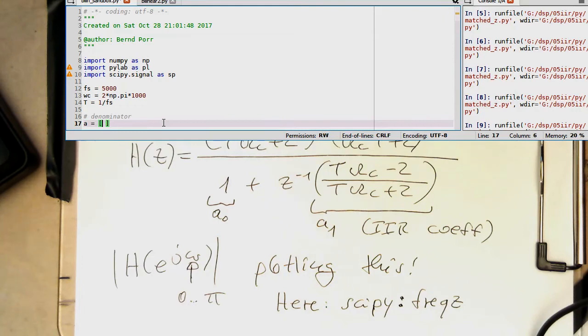So that's our function here, that's our denominator. So a, and so this will be starting with the 1. And then the z to minus 1, it's just here T multiplied by omega, omega c. And then we have here minus, minus 2, and then divided this by T multiplied by omega c plus 2. So with that we have the a coefficient, the denominator.